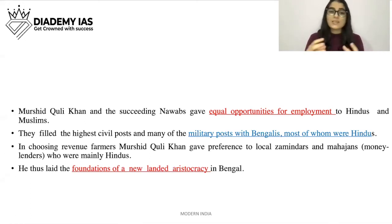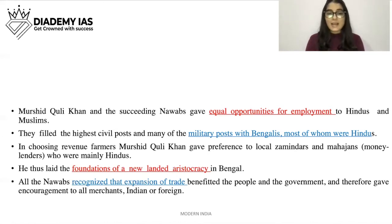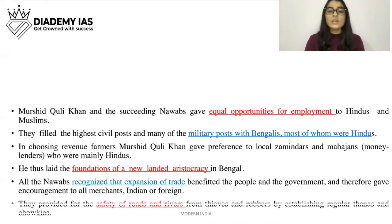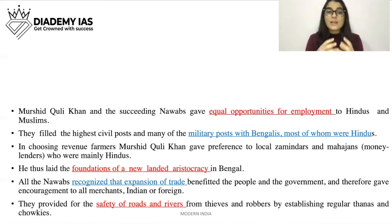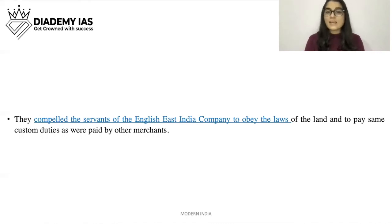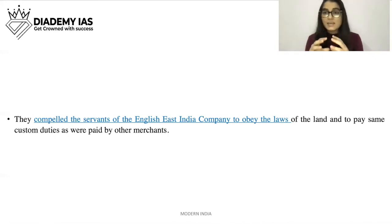All the Nawabs recognized that expansion of trade benefited the people and the government, and therefore gave encouragement to all merchants, Indian or foreign. They provided for the safety of roads and rivers from thieves and robbers by establishing regular thanas and chaukis. They compelled the servants of the English East India Company to obey the laws of the land and to pay the same custom duties as were paid by other merchants.